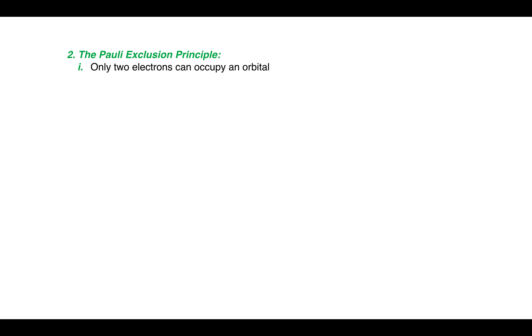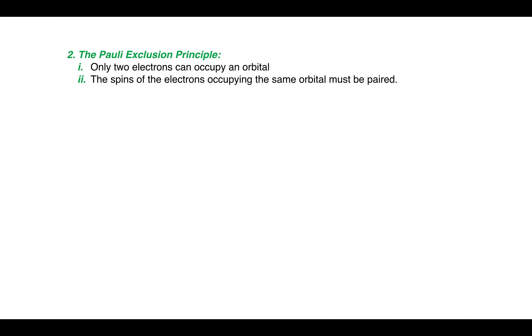The second principle is Pauli's exclusion principle. This principle can be explained in two parts. According to this principle, only two electrons can occupy an orbital, and while these electrons are occupying the orbital, the spins of the electrons must be paired — that is, these electrons must have opposite spins.